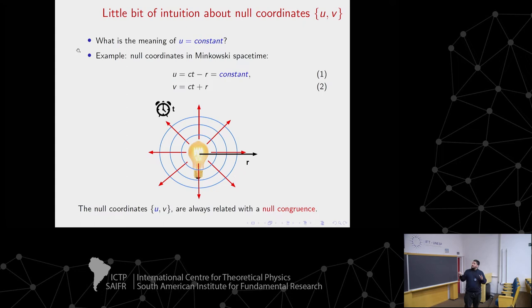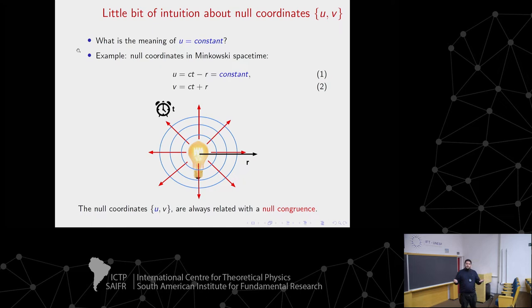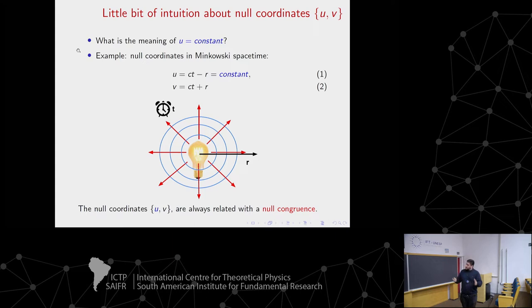The intuition I want to give you: when we talk about the null coordinate, implicitly we are talking about a set of null rays. Talking about null coordinates means talking about a set we usually call a null congruence. With this null coordinate we want to describe the whole spacetime, so this set of null rays must fill the whole spacetime. One way to do it in Minkowski spacetime is to take the outgoing radial null rays, which fill the whole spacetime and satisfy the equation.